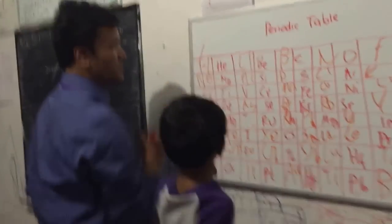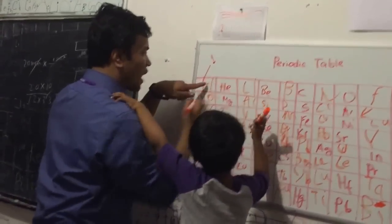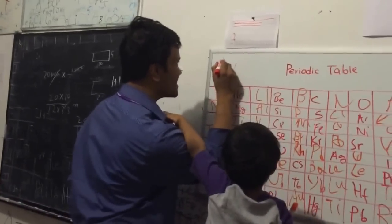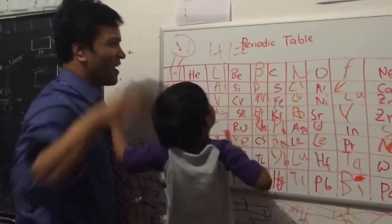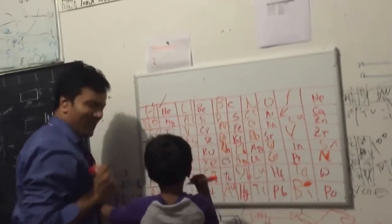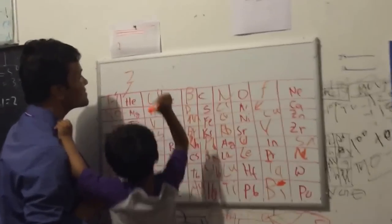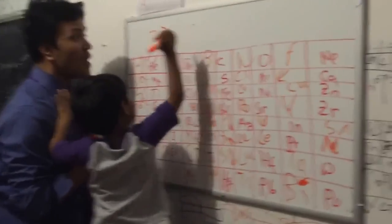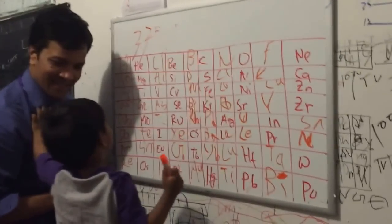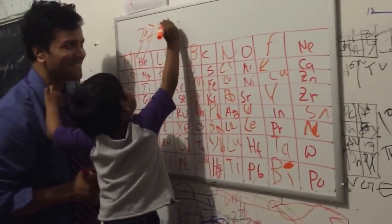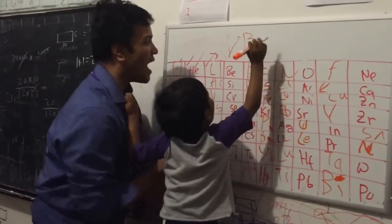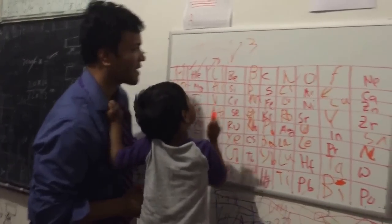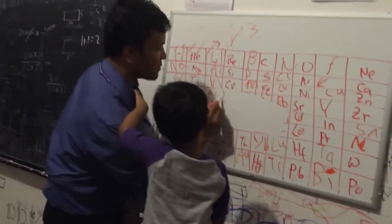Very good! Now tell me, what is the atomic number for hydrogen? And how many protons are in hydrogen? Okay, so what is the atomic mass for hydrogen? Fantastic. Now let's do helium — what is the number for helium? And how many protons in helium? So what is the atomic mass for helium?